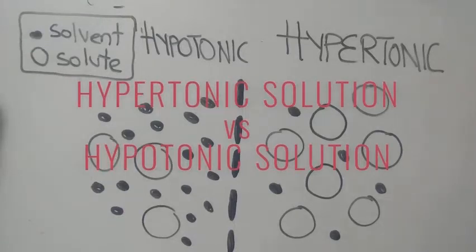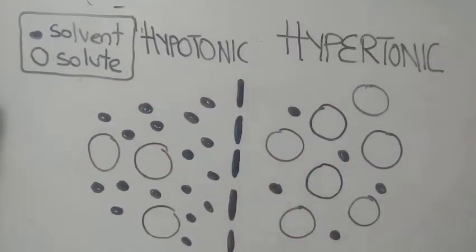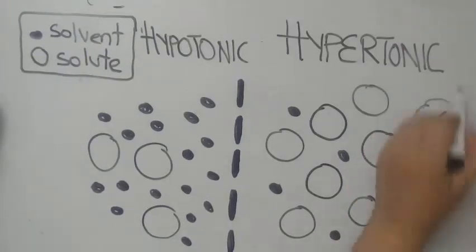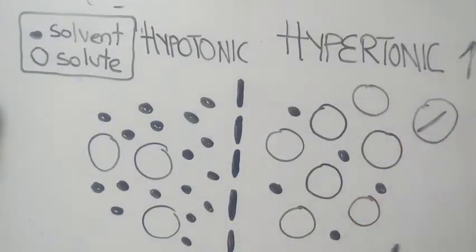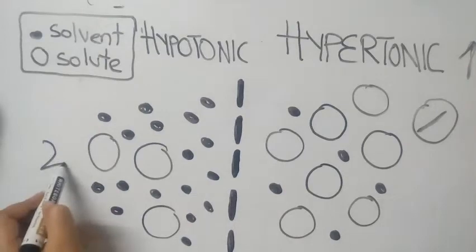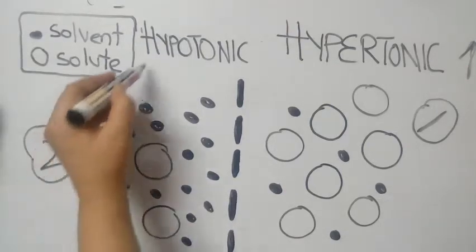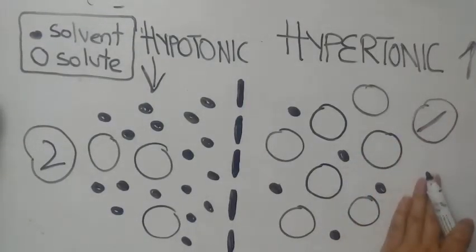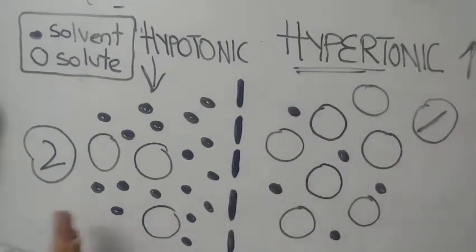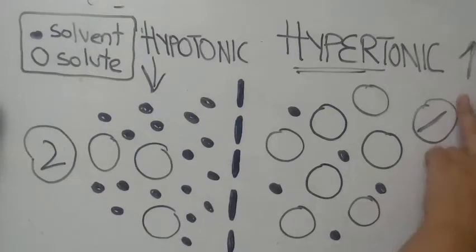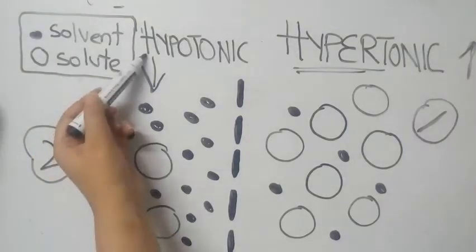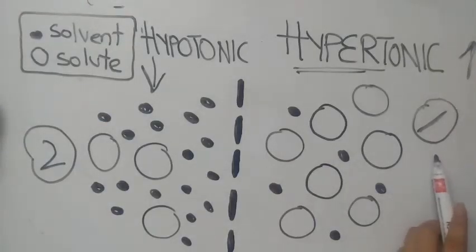Here we have two solutions separated by a membrane. This is solution one with high solute concentration, and this is solution two with low solute concentration. Solution one is hypertonic compared to solution two because it has high solute concentration, whereas solution two is hypotonic compared to solution one because it has low solute concentration.